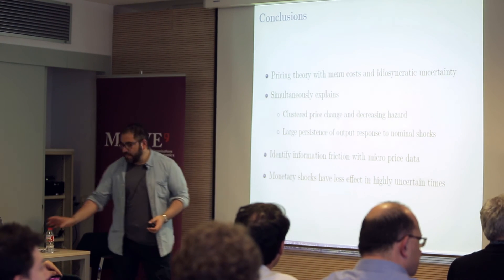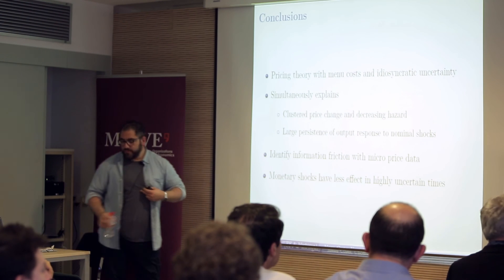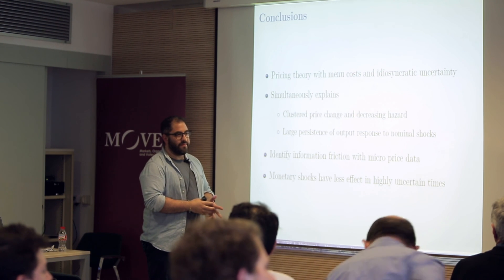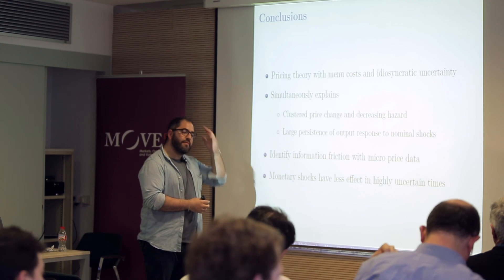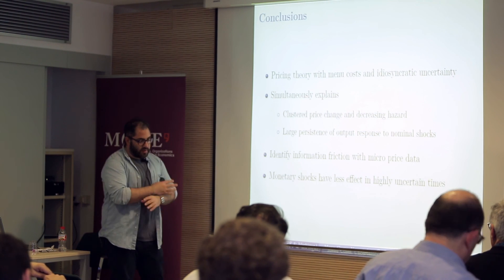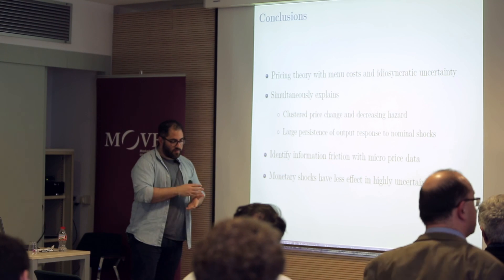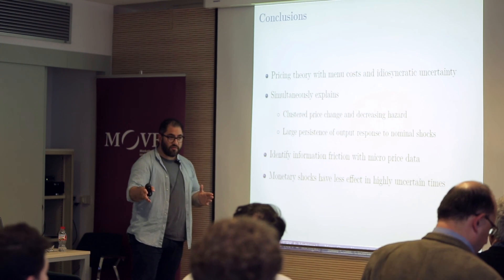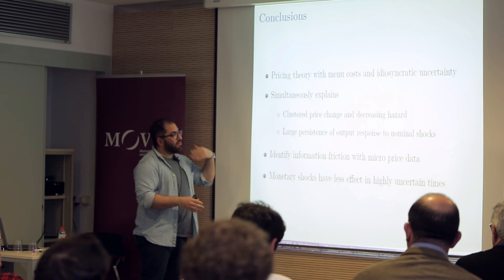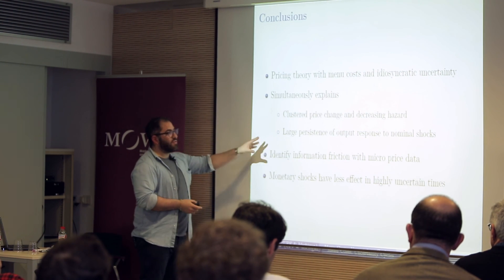One question: do we know about which types of firms or sectors adjust prices multiple times? There's definitely cross-sectoral heterogeneity in adjustment frequencies. This model has no sectors, but within sectors there could be different information frictions. Papers have documented different frequencies of adjustment across sectors, which could be mapped to different menu costs and different shock volatilities. Cross-sector and cross-country evidence on the information friction would be a useful extension.